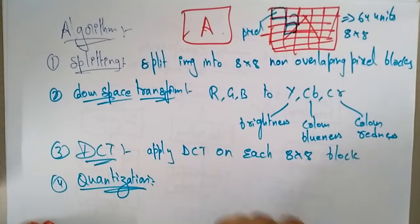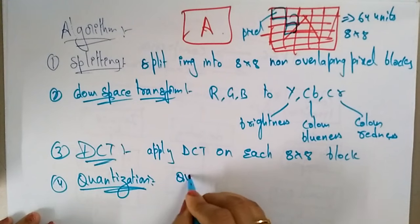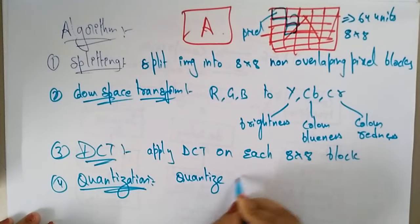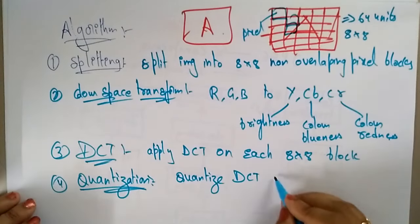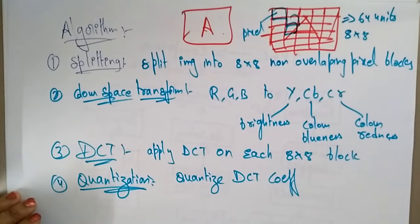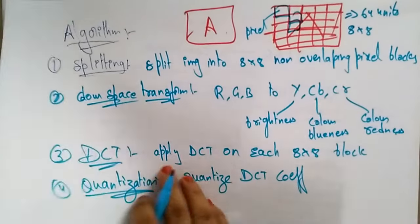Quantization: you quantize the DCT coefficients according to the psycho-visually tuned quantization tables. So you quantize the DCT coefficients according to these quantization tables.